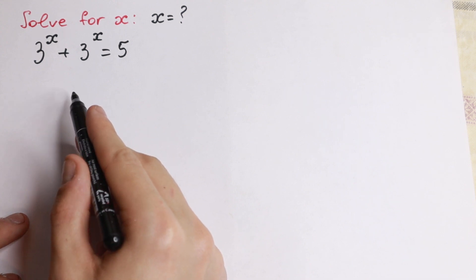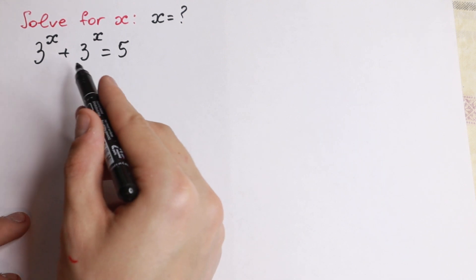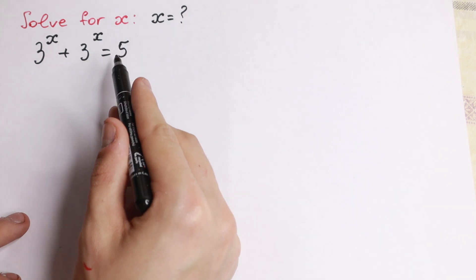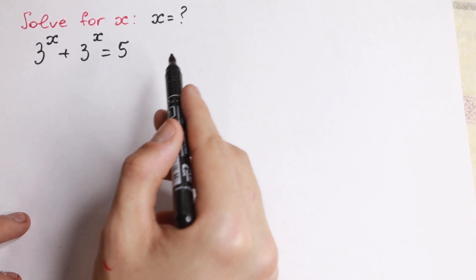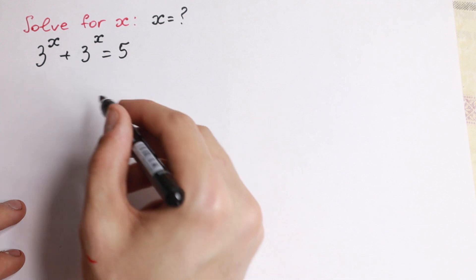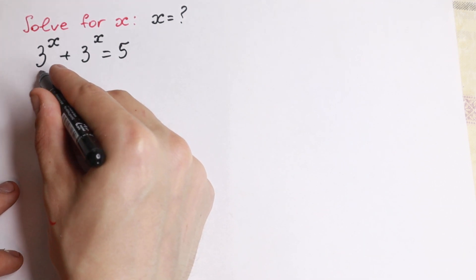On the first sight, this equation looks really hard because we have exponents, we have the sum on the left, and on the right hand side we have a constant. So on the first sight this equation is real hard, but I want to show you a quick solution to this equation.